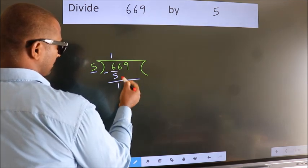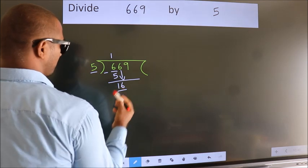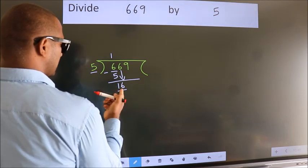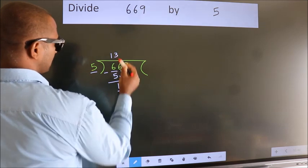After this bring down the beside number. So 6 down. So 16. A number close to 16 in 5 table is 5 3s 15.